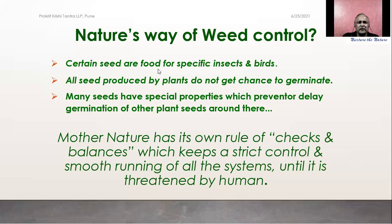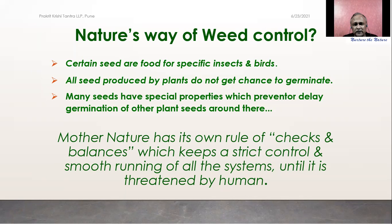Regarding weed control: weeds come on their own during the conducive season, particularly in the rainy season after the first few showers. A green cover appears automatically, then dense vegetation follows. As the season advances, flowering and fruiting happens, then yellowing, seed dispersal, and the plants vanish. This recycling process happens all around us, but since we are not aware of it, we don't bother about it. That is the way nature's natural cycle works.